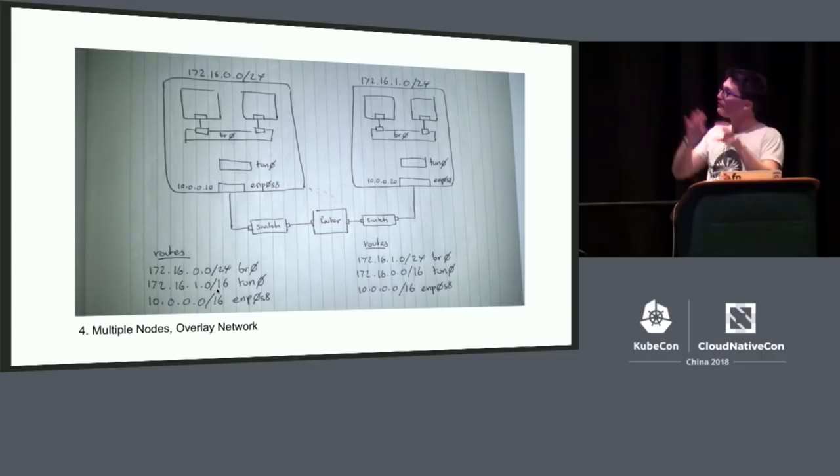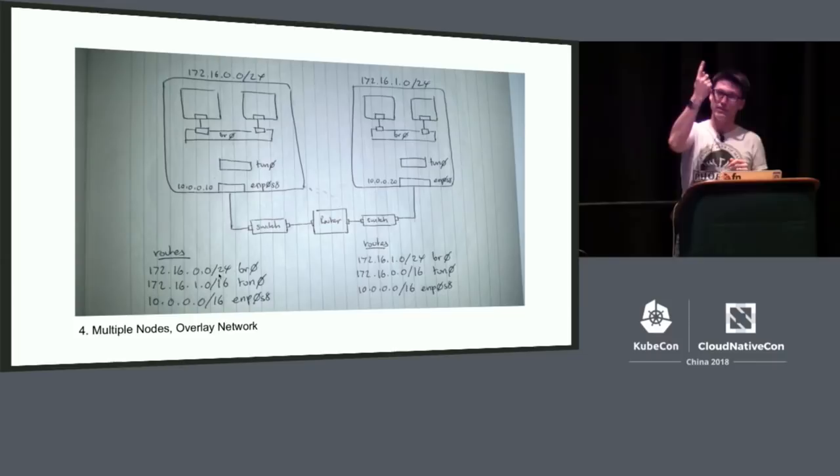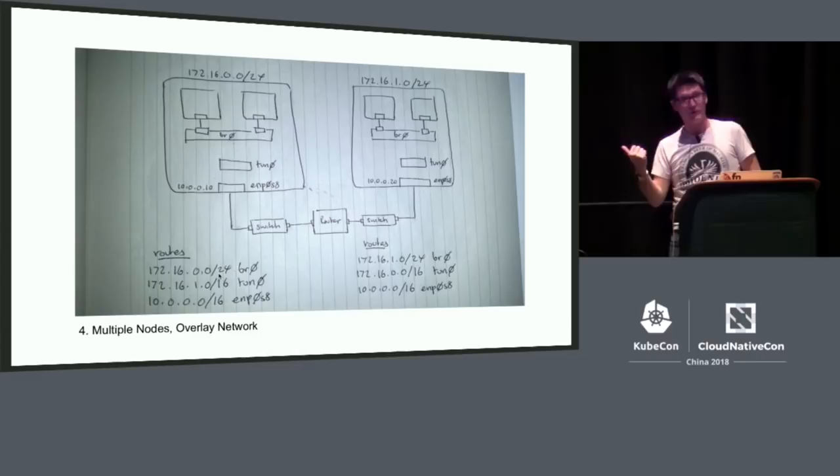The routing rules: on the left-hand side, everything for containers on my node goes to the bridge. The rule beneath it says everything for containers on the other node, send it to the TUN device. And likewise, we've got corresponding routes on the other side.